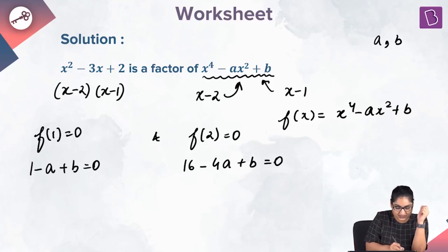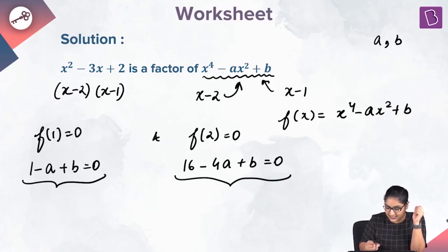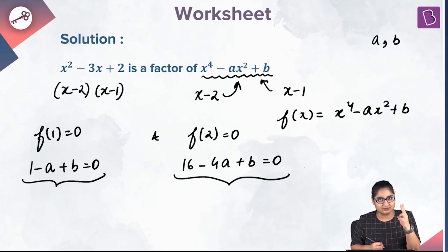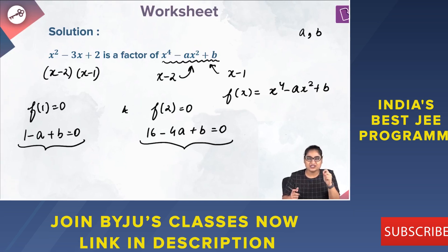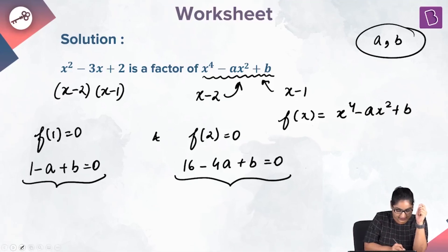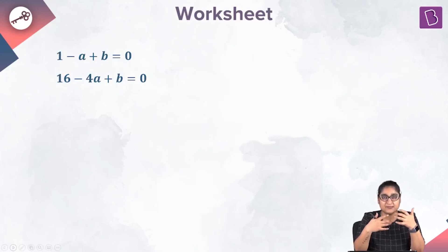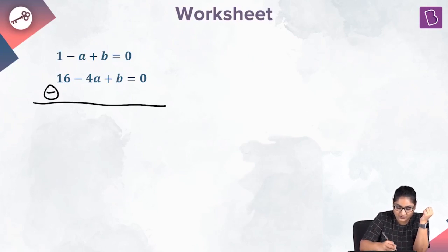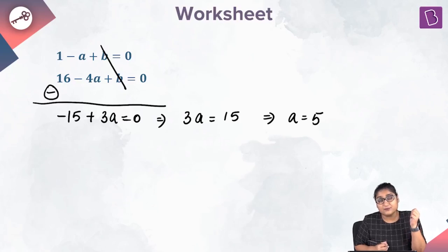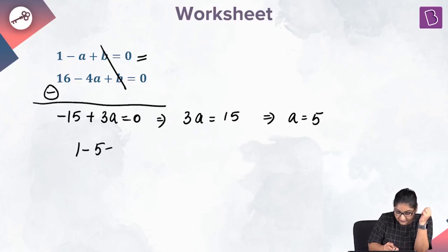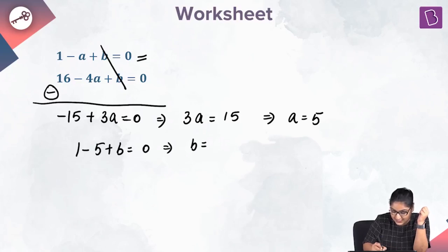We have two equations: 1 minus a plus b equal to 0 and 16 minus 4a plus b equal to 0, with two variables. Eliminating b by subtracting the equations gives minus 15 plus 3a equal to 0, so 3a equals 15, meaning a is equal to 5.